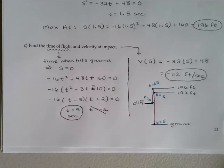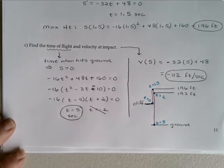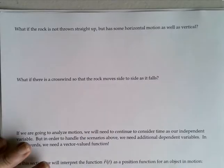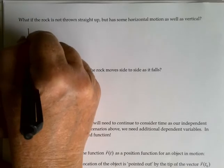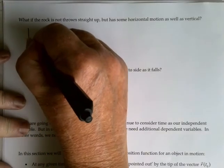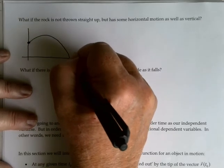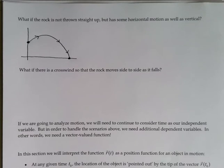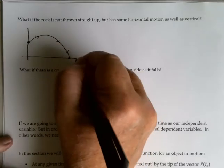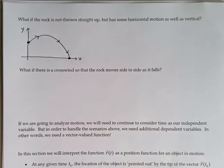We'll continue to use these same ideas, but now we're going to start to move toward 2 and 3 dimensional systems — we don't have to just go straight up and down, but can consider horizontal motion as well. If I have a rock thrown not just straight up but also horizontally, it's going to go up and out and come back down while also moving in the horizontal direction. Now I have two variables to keep track of: not just vertical height but also horizontal progress x as well as vertical height y.